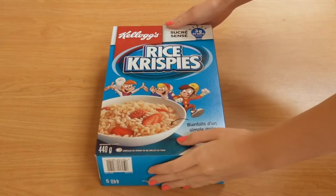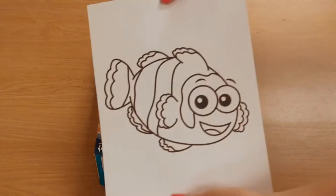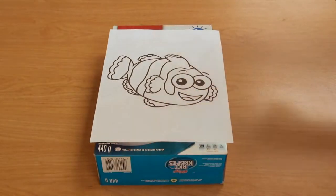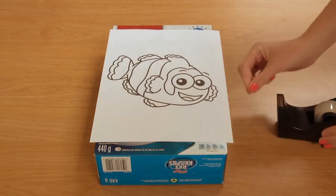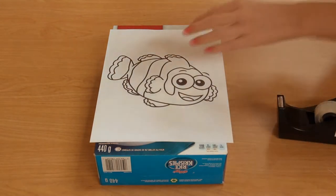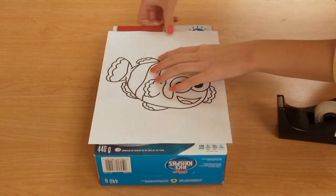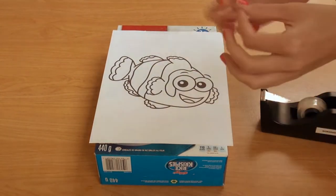To get started, find, print, and tape the image you want projected onto the cereal box. I found this adorable picture of a fish that works great. When searching on Google, some great terms to use include coloring pages and black and white clip art.